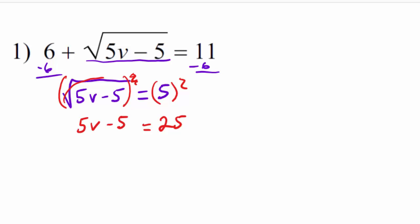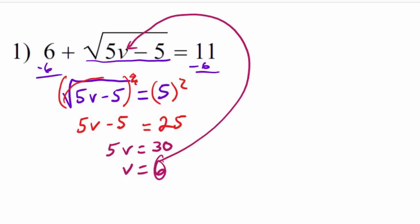We just keep solving for the variable like normal. We add 5 to both sides, so 5v equals 30. Divide by 5 and v appears to equal 6. But if you want to be absolutely certain that's correct, you should put the 6 back in place of v.